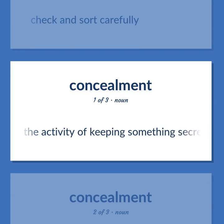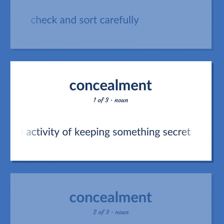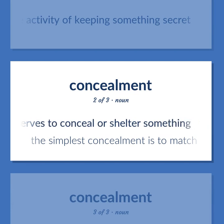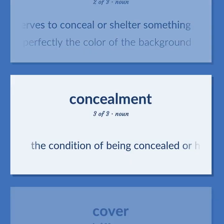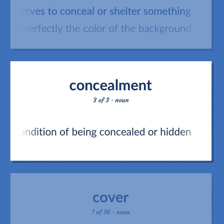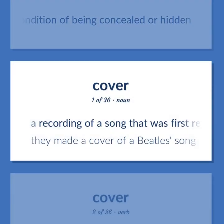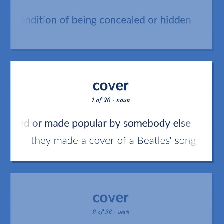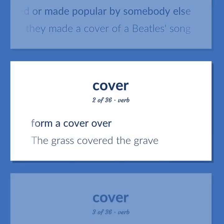The activity of keeping something secret. A covering that serves to conceal or shelter something. The simplest concealment is to match perfectly the color of the background. The condition of being concealed or hidden. A recording of a song that was first recorded or made popular by somebody else. They made a cover of a Beatles song. Form a cover over.